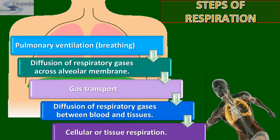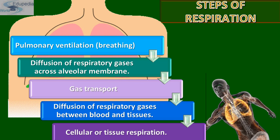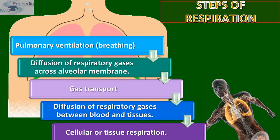The steps of respiration are: first, breathing (pulmonary ventilation); second, diffusion of respiratory gases across the alveolar membrane; third, gaseous transport in the blood; fourth, diffusion of respiratory gases between blood and tissues; and finally, cellular respiration.